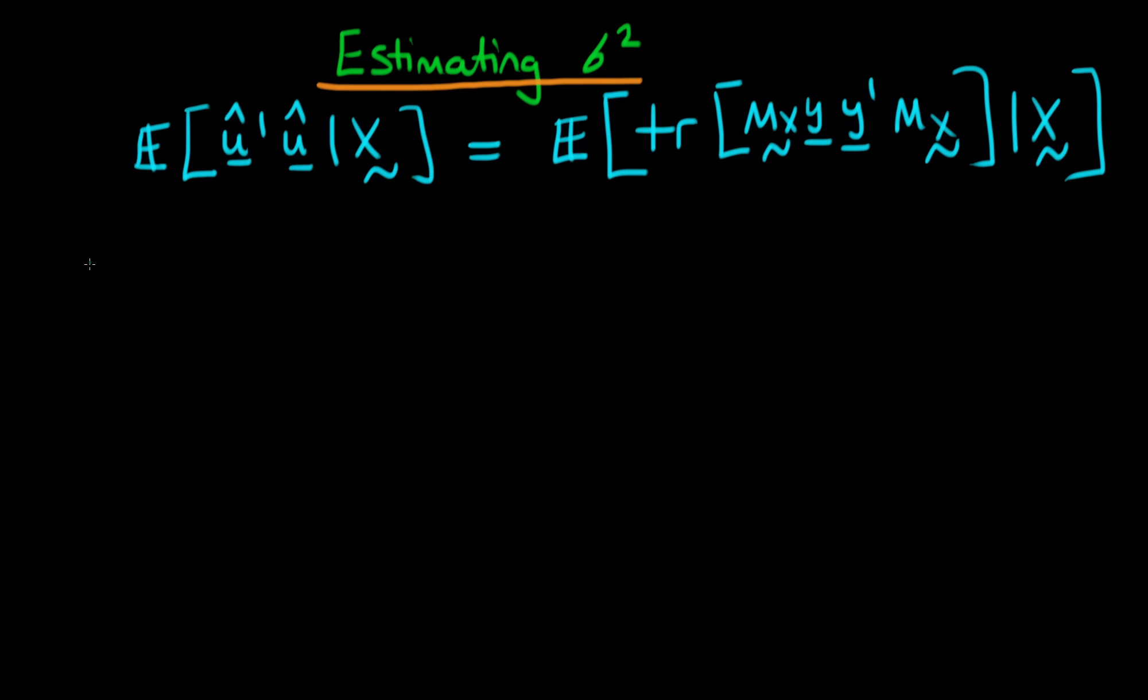Working on this right hand side a bit further, we know that the trace operator and the expectations operator are both unaffected by order. So essentially what we can do is take the trace of the expected value of mx times y times y primed times mx, and this whole thing given that we already have x here.